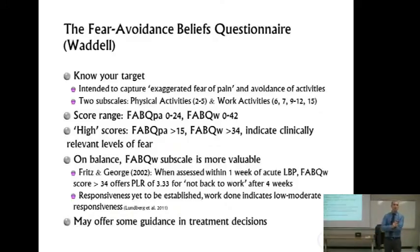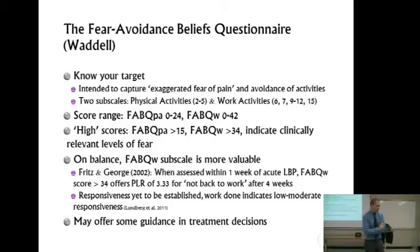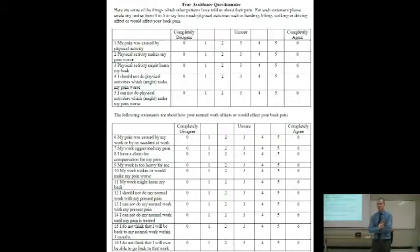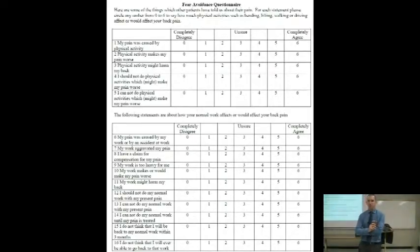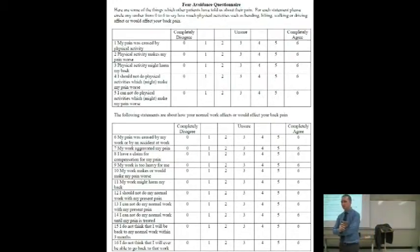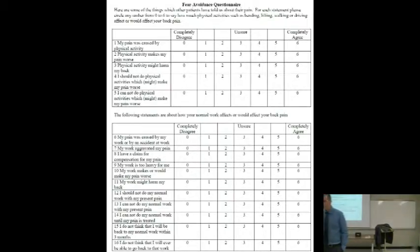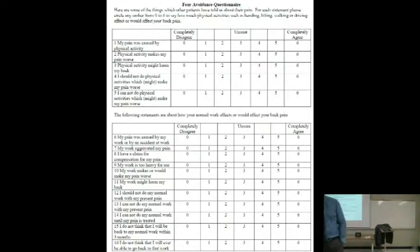This is intended to capture exaggerated fear of pain and avoidance. Let's take a look at those items again. Does it all appear to be exaggerated? Is there anything in there that appears to be perfectly rational? The first question is: my pain was caused by physical activity. And in fact, that's actually why it's not included in the subscale score.